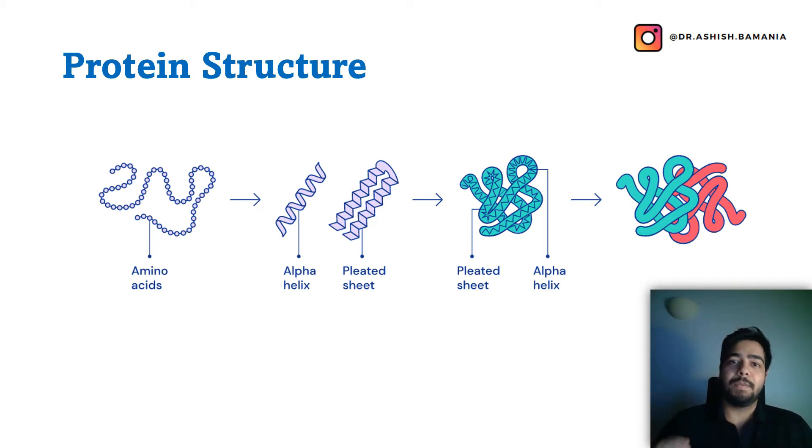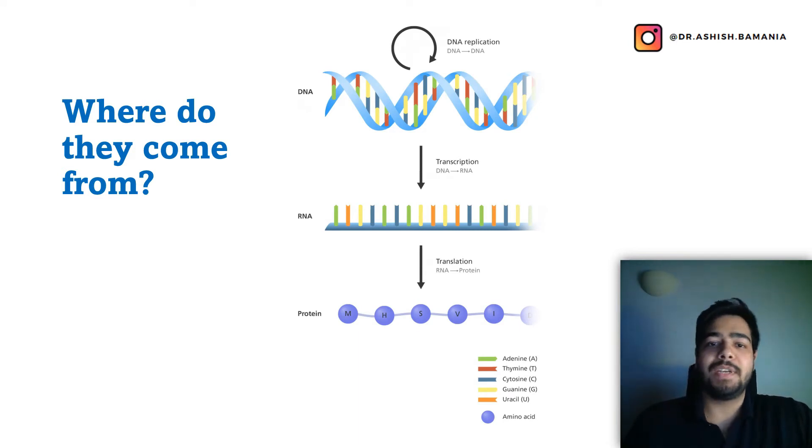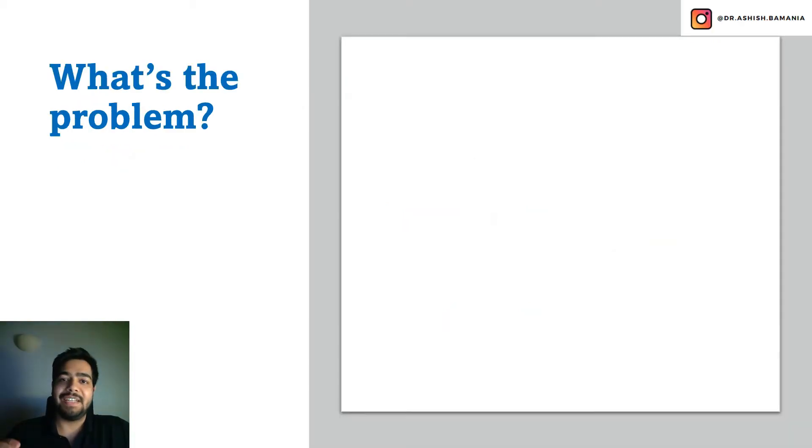The next question is: where do proteins come from? All proteins come from DNA. DNA leads to formation of RNA through a process called transcription, and this RNA is then translated into the primary structure of a protein. So proteins come from a genetic code—the DNA.